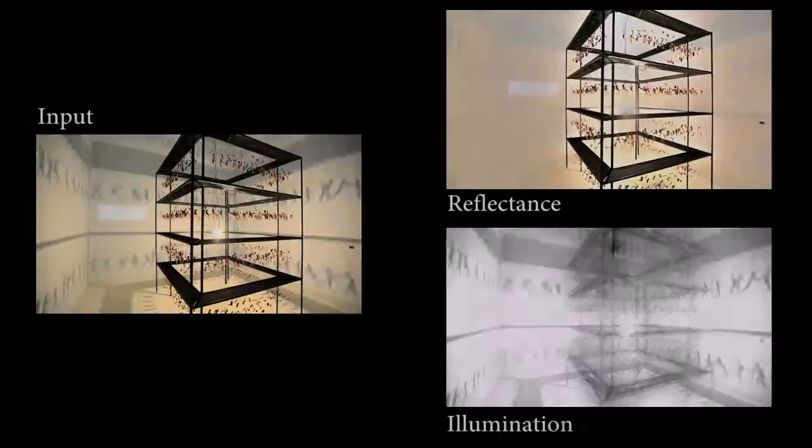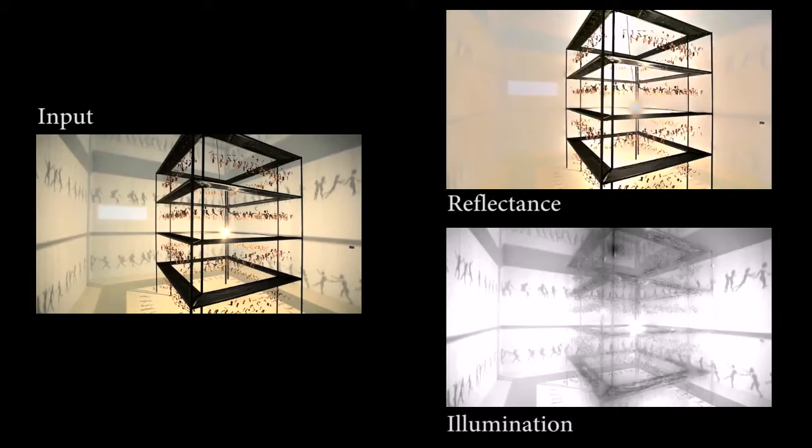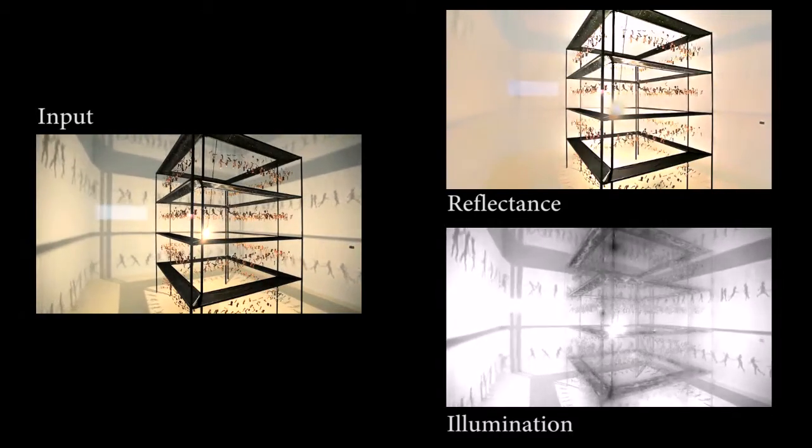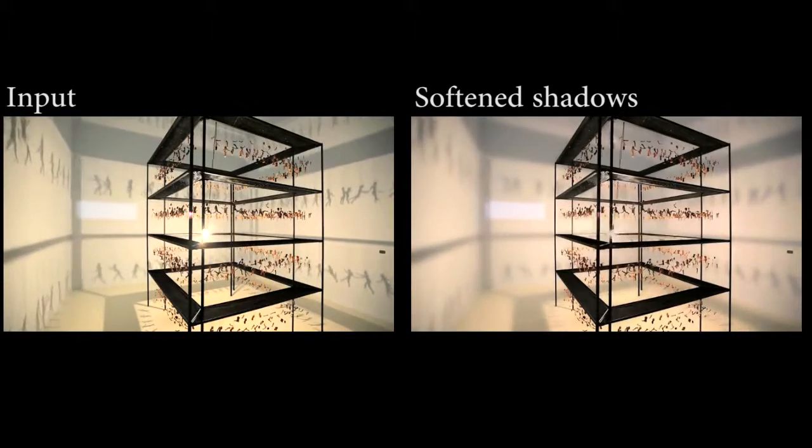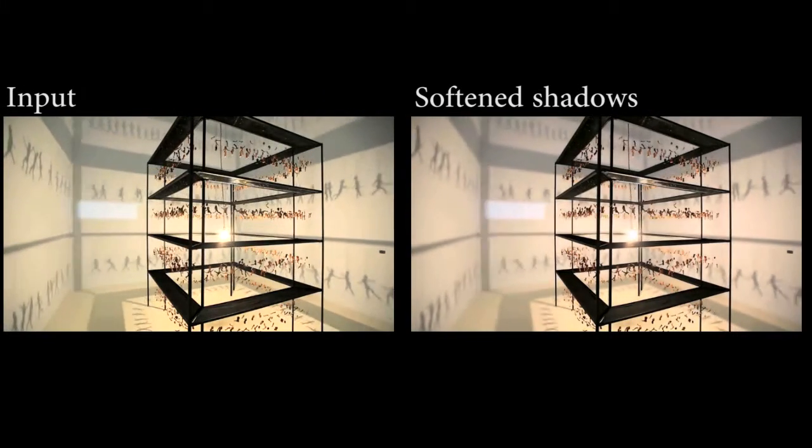As well as editing the reflectance, we can also edit the illumination. This museum piece creates sharp shadows on the surrounding walls. With our decomposition, we blur the illumination video to soften the shadows.